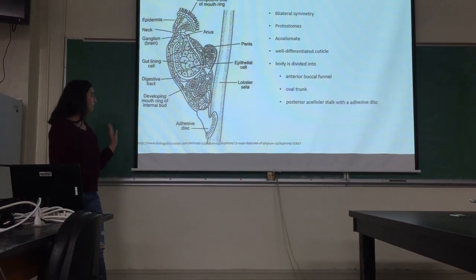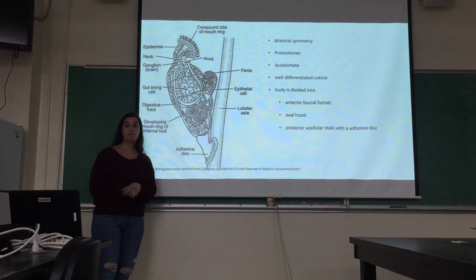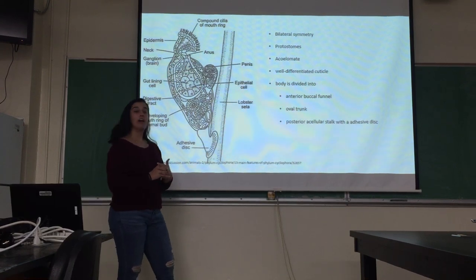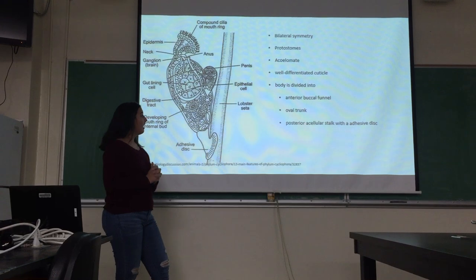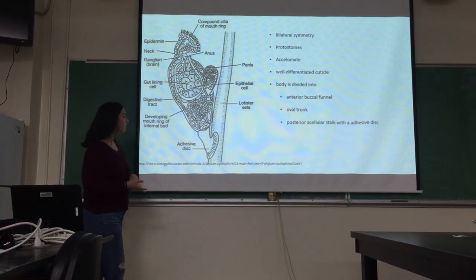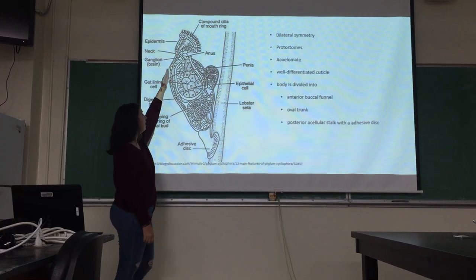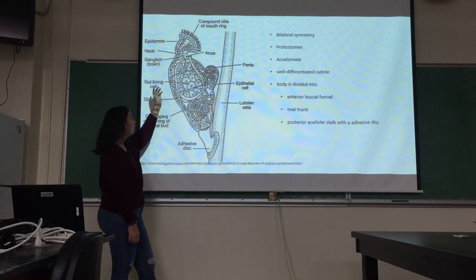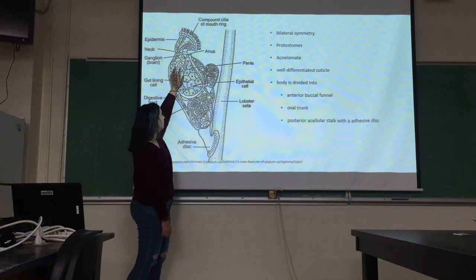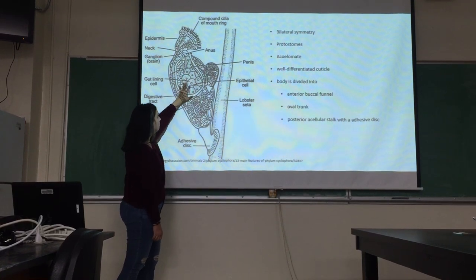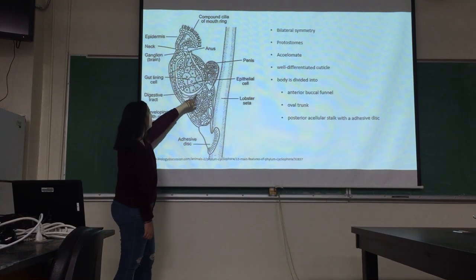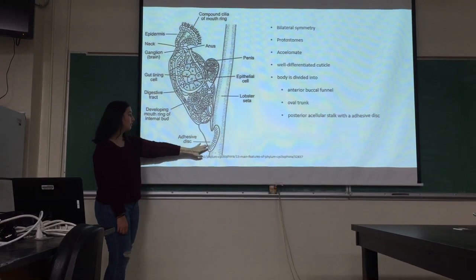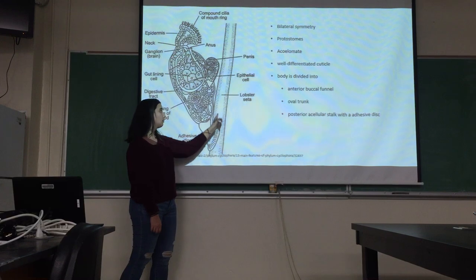Some basic body structure of Cycleophora: it has bilateral symmetry, they are protostomes, they are coelomate, and they have a well-differentiated cuticle. The body is divided into three regions. The first is the anterior buccal funnel, up in the head region, which has the mouth ring — where its name is derived from — with dense cilia around it, and a closed esophagus leading to the second body part, the trunk, which has a U-shaped digestive tract. The third part is the posterior adhesive stalk with an adhesive disc, which helps it attach to the lobster's setae.